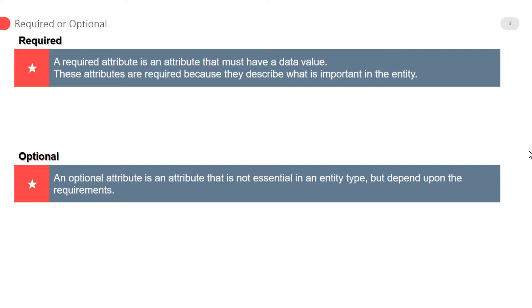For example, student name, student registration number, student phone number are the required attributes. Optional attributes: an optional attribute is an attribute that is not essential in an entity type but depends upon the requirements. For example, student hobby is an optional attribute.